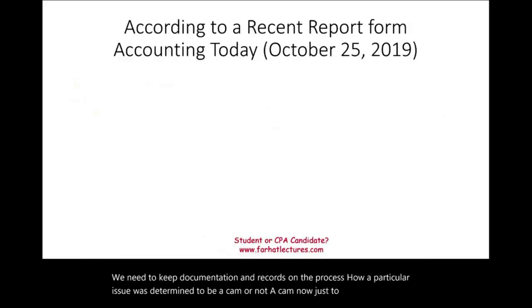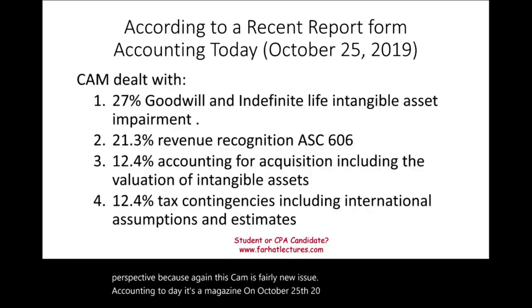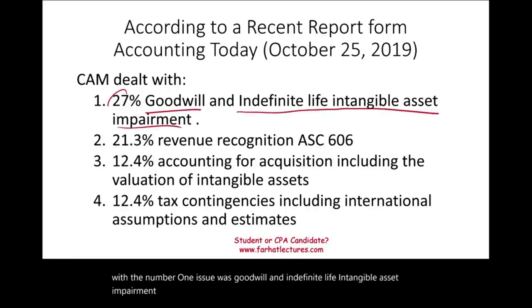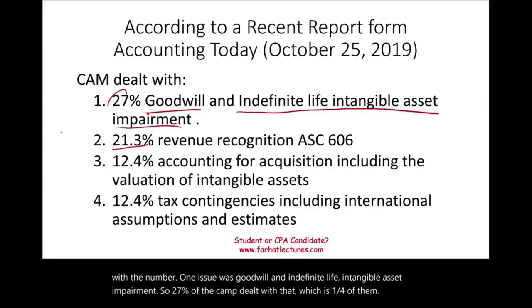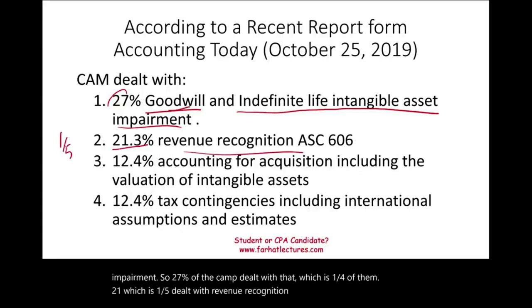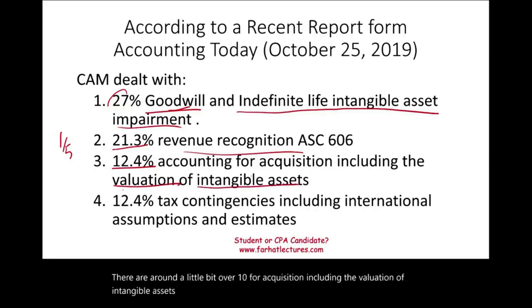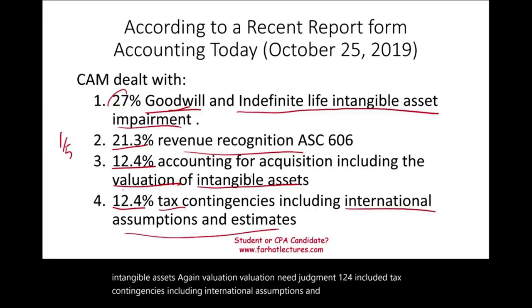To give a realistic perspective — since CAM is a fairly new issue — Accounting Today magazine, on October 25th, 2019, published a list of topics covered under CAMs. The number one issue was goodwill and indefinite-life intangible asset impairment at 27%. Revenue recognition accounted for 21%. Acquisitions, including valuation of intangible assets, and tax contingencies including international assumptions and estimates each accounted for about 12.4%. Any time we have an estimate or judgment, it could be a CAM and needs to be reported.